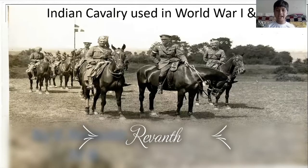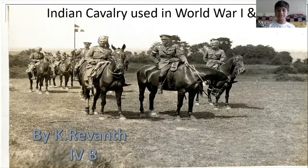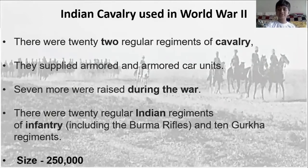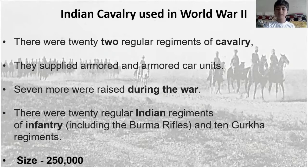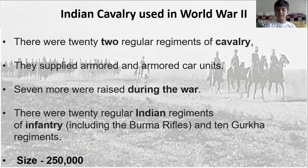Hi friends, my name is Revan. I am studying in Class 4B. Today I am going to talk about Indian cavalry used in World War I and II. Indian cavalry used in World War II: there were 22 regular regiments of cavalry. They supplied armored and armored car units. Seven more were raised during the war. There were 20 regular Indian regiments of infantry including the Burma Rifles and 10 Gurkha regiments. 2,50,000 warriors participated in the war.